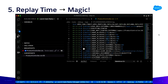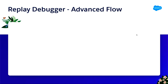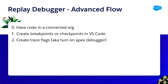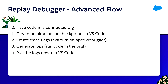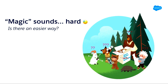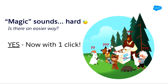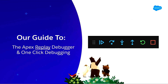So let's review — there are a lot of steps. For the more advanced flow of the Replay Debugger: you have some code, create some breakpoints, create some trace flags, generate the logs, pull the logs down to VS Code, and then replay. Our team has been working hard at creating a more interactive replay experience, so now you can get access to a Replay Debugger with just one click. Here is our guide to your Apex Replay Debugger and the one-click debugging experience.